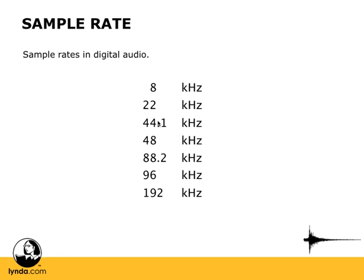Any sample rate lower than 44.1 kHz and you can usually detect degraded sound quality — we'll listen to a few examples. Rates higher than 44.1K, such as 48, 96, and 192, are used quite a bit in digital audio and provide excellent results. We'll talk more about the trade-offs of using different rates, because it's not as simple as just saying, let's use the best rate — there are a few things you need to take into account.